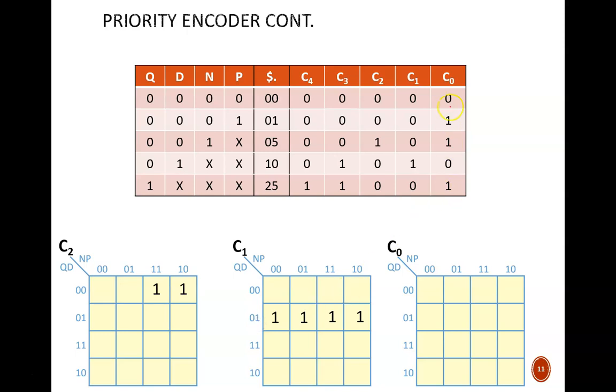And finally, we reach C0. The bottom one in the table corresponds with the entire bottom half of the K map, every time Q is high. This middle one corresponds to Q equals 0, D equals 0, and N equals 1, which is these two squares, just like what we saw for C2. And this last one only fills in one square, with input code 0001. With that, the K map is complete.